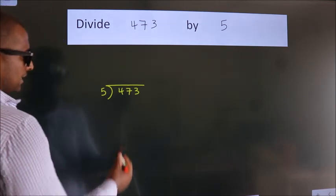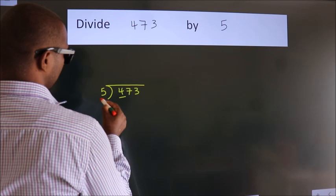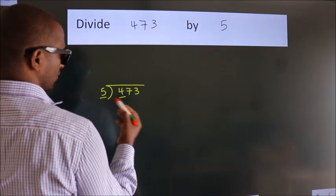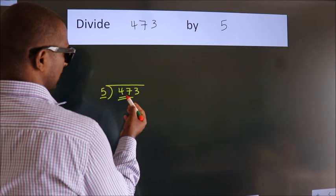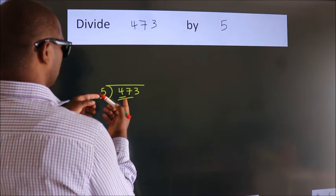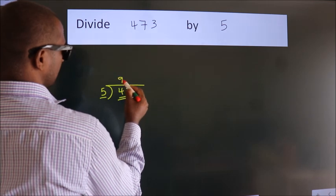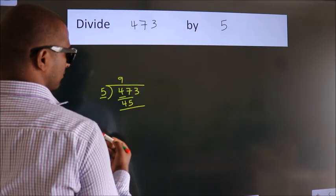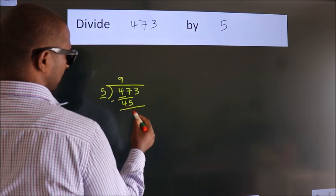Next. Here we have 4, here 5. 4 smaller than 5. So we should take 2 numbers, 47. A number close to 47 in 5 table is 5 nines, 45. Now we should subtract, we get 2.